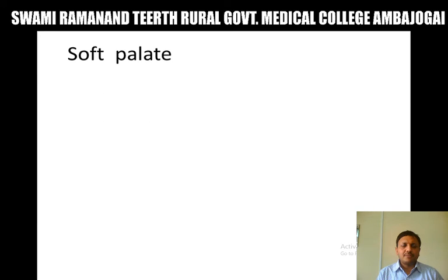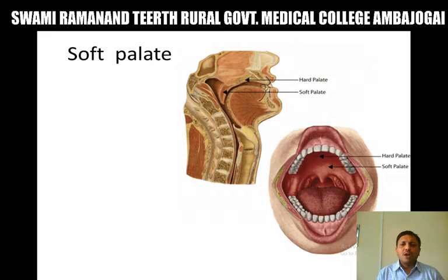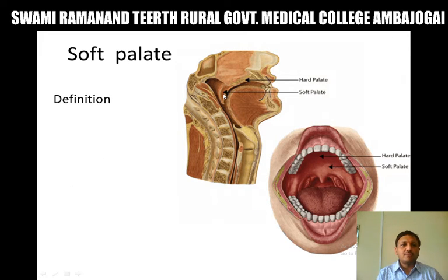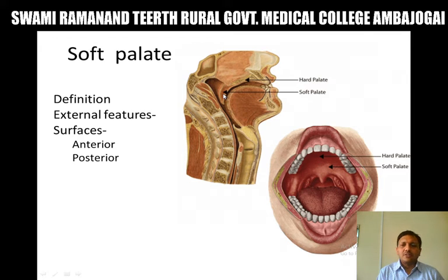Now let's come to the soft palate. External features of the soft palate: it shows an anterior surface and a posterior surface. The anterior surface of the soft palate is concave and bears a median raphe, whereas the posterior surface is convex and forms the floor of the nasopharynx.